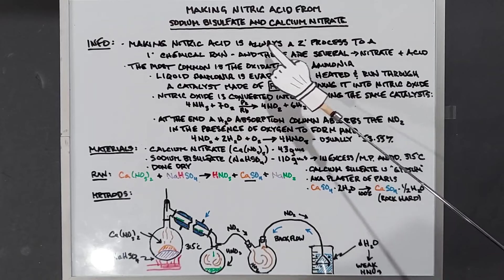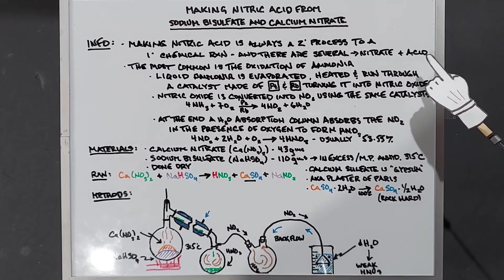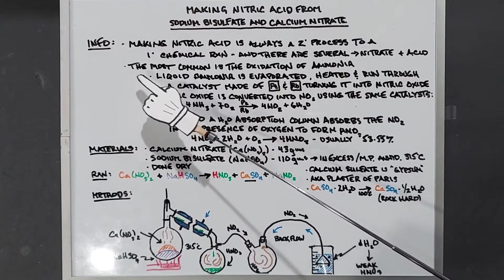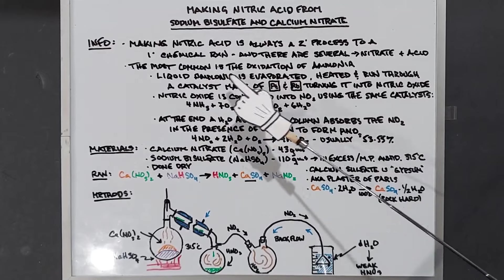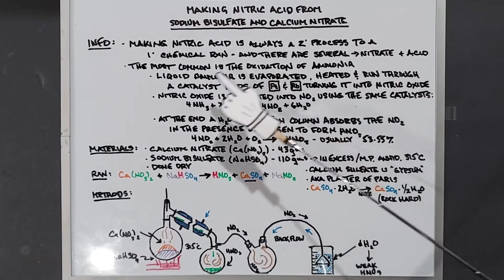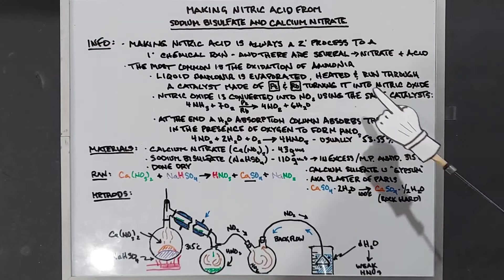That's pretty basic. There are many ways to do it, usually done with some sort of nitrate and acid, usually sulfuric acid. However, commercially the most common is the oxidation of ammonia. In this process liquid ammonia is evaporated, heated, and run through a catalyst made of platinum and rubidium, turning it into nitric oxide.